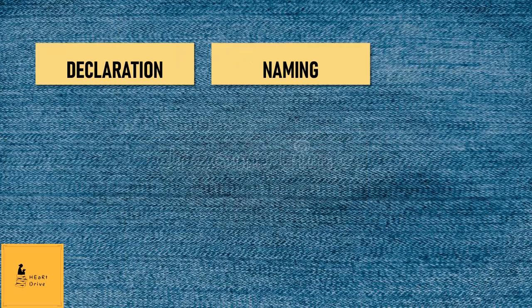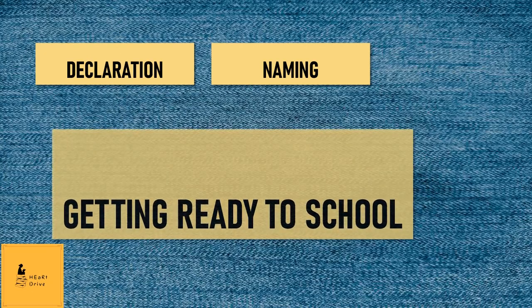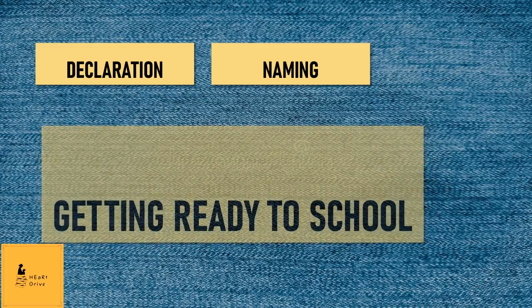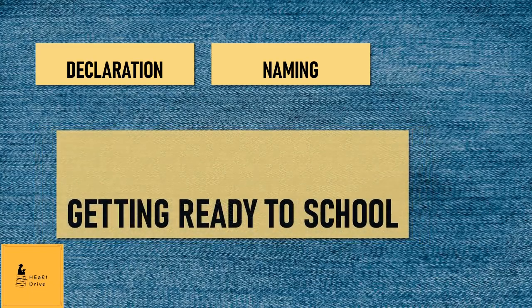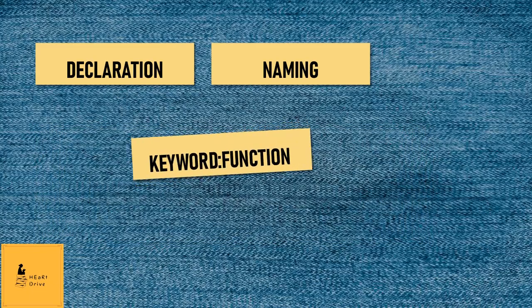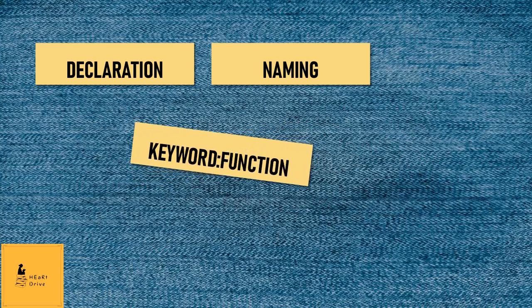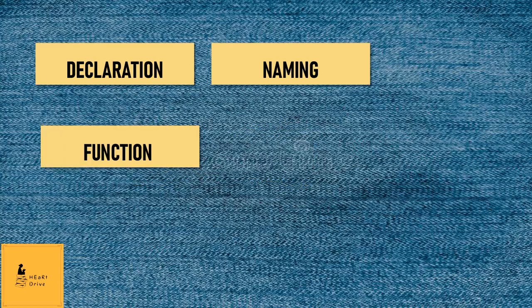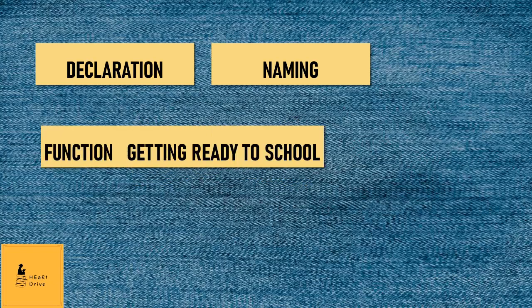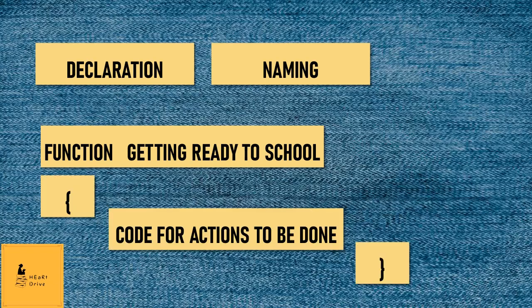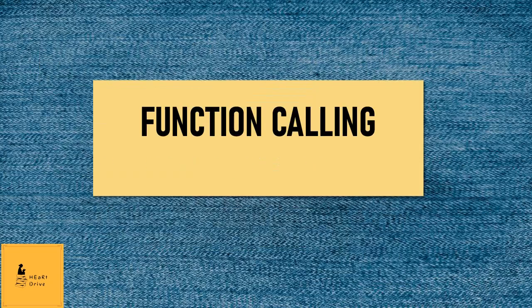Declaration means naming your function. For example, if I plan to write code for my program getting ready to school, I should start my program with the keyword function. Then I will give the name of my function, which is getting ready to school, and under that I have to write code for what my getting ready to school function should do. Then comes the next part: function calling.